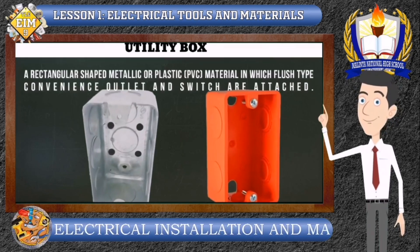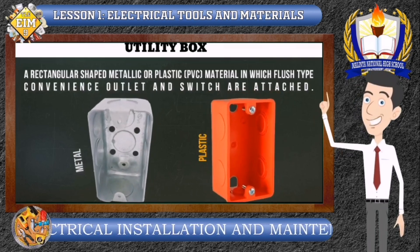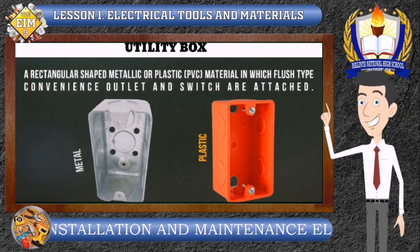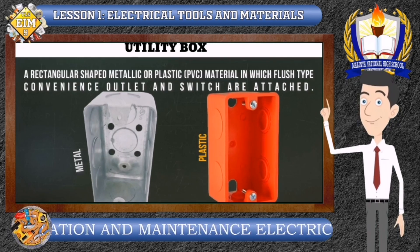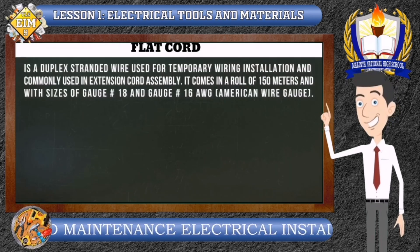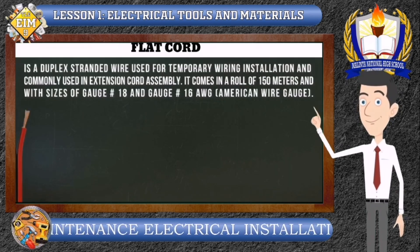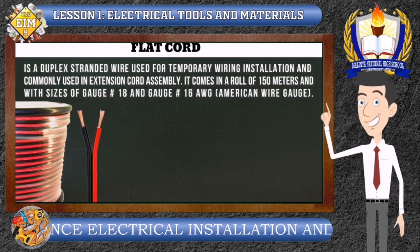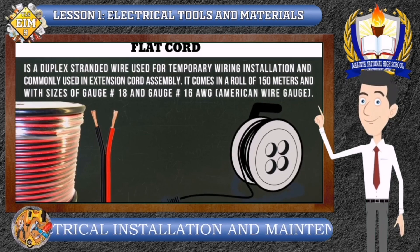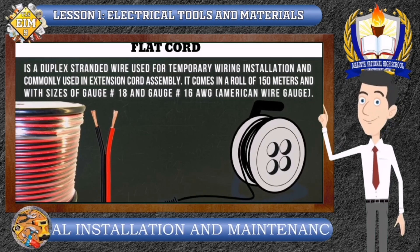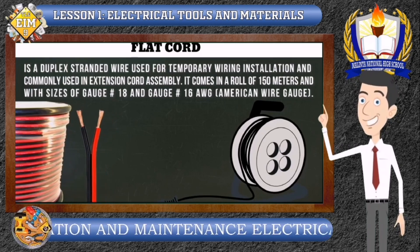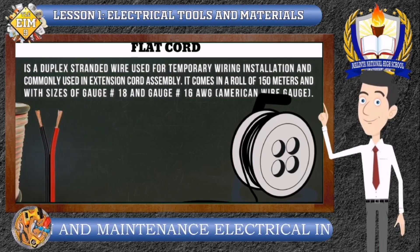Utility Box is a rectangular-shaped metallic or plastic PVC material in which flush type convenience outlets and switches are attached. Flat Cord is a duplex stranded wire used for temporary wiring installation and commonly used in extension cord assembly. It comes in a roll of 150 meters and with sizes of gauge number 18 and gauge number 16 AWG (American Wire Gauge).